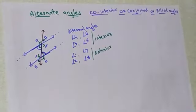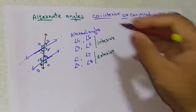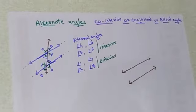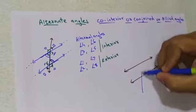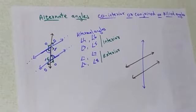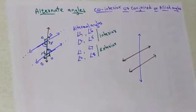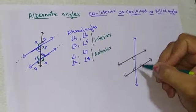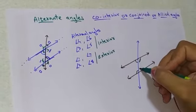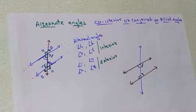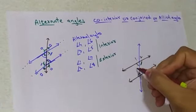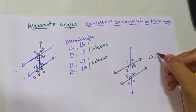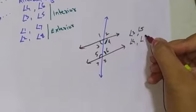Now let us see the co-interior angles. Same setup: parallel lines never meet, never intersect, the distance never changes. If this is the transversal, because of this transversal 8 angles are formed. If I name them 1, 2, 3, 4, 5, 6, 7, and 8 — angle 3 is co-interior with angle 5, and angle 4 is co-interior with angle 6.